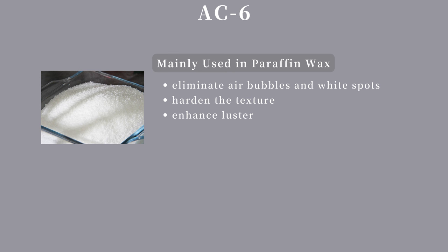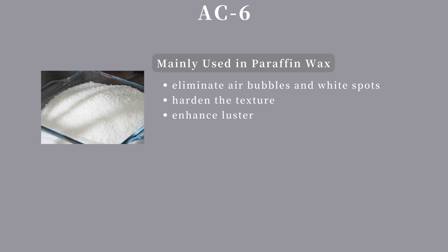It's important to note that adding too much AC6 will reduce the transparency of the paraffin candle. To produce a flawless paraffin wax pillar while maintaining transparency, add within the range of 0.1% to 0.5% AC6. Adding up to 1% will make the texture smoother and harder, but it becomes more opaque. Avoid adding more than 3% as it can lead to flame retardancy and you may smell the additive while burning. Please note we are referring to AC6, not AC6A — ensure you use the correct one.